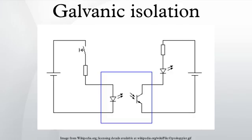Galvanic isolation is a principle of isolating functional sections of electrical systems to prevent current flow. No direct conduction path is permitted. Energy or information can still be exchanged between the sections by other means,